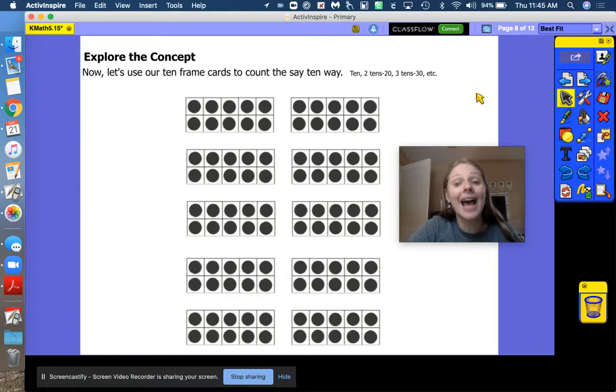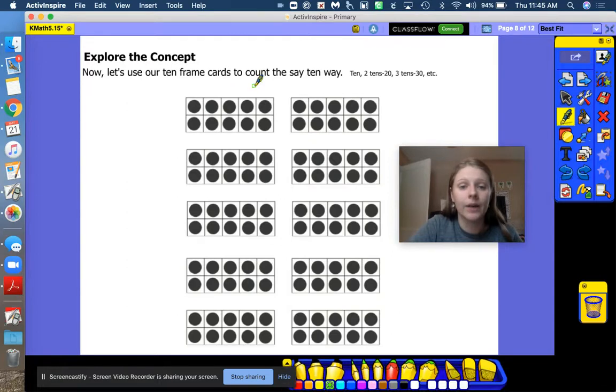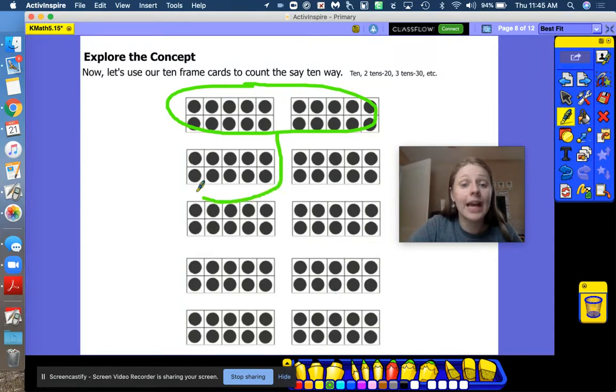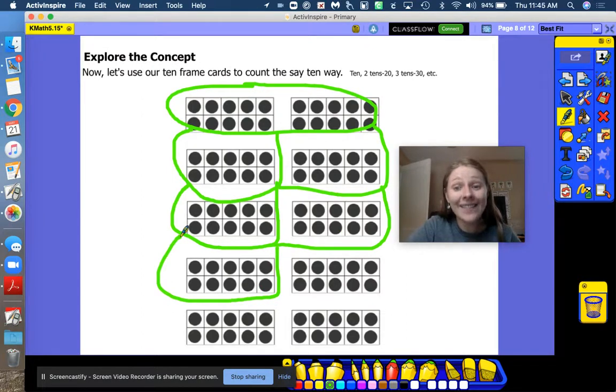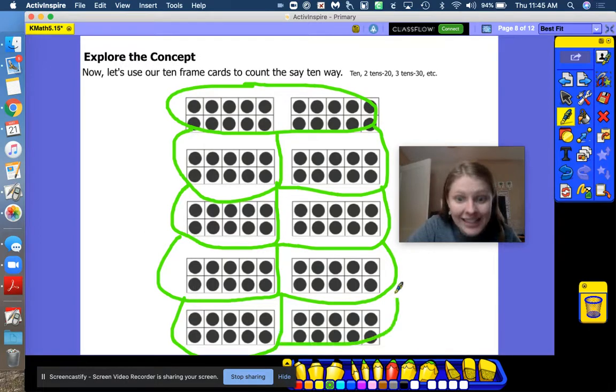We're gonna count the say ten way now. So I'm gonna say two tens, twenty, right? So we've got two tens, twenty. Now we're gonna add one. Three tens, thirty. Four tens, forty. Five tens, what would that be? Fifty, fifty. Six tens, sixty. Seven tens, seventy. Good job. Eight tens, eighty. Nine tens, ninety. Ten tens makes one hundred. You counted that so quick.